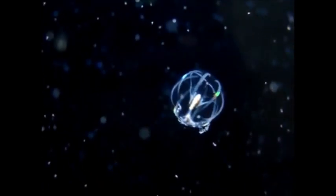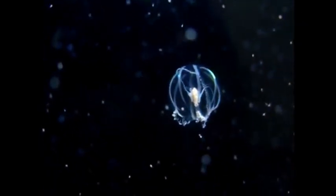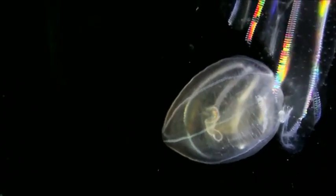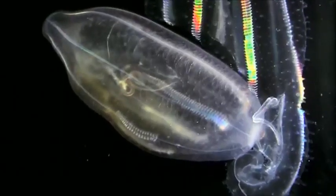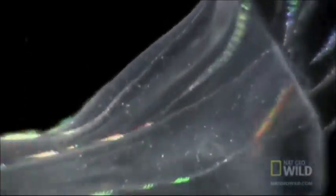They can extend their stomachs to hold prey half their size. Other comb jellies have no tentacles. Instead, their mouth contains hooks to bite off chunks of prey and secrete a poison to paralyze prey. They will even feed on other comb jellies larger than themselves.